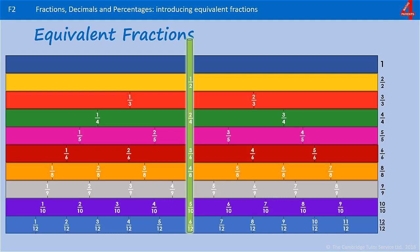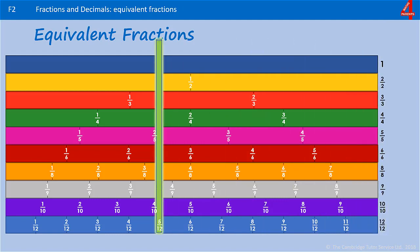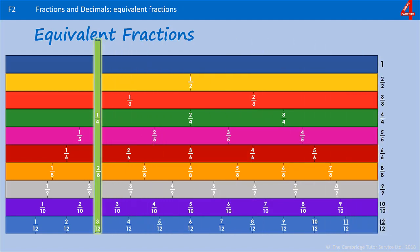You'll notice that with a half, the numerator—the number at the top of the fraction—is half of the number at the bottom, the denominator. So one is half of two, with two quarters two is half of four, and you'll see that carries on all the way down. So you could have five hundred over one thousand and that's still worth a half.